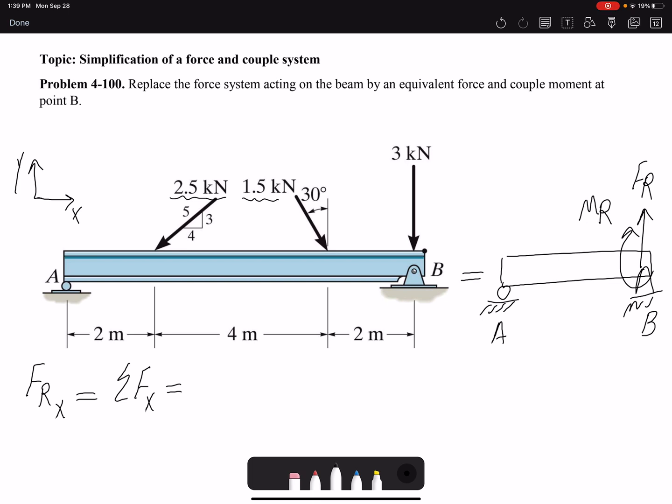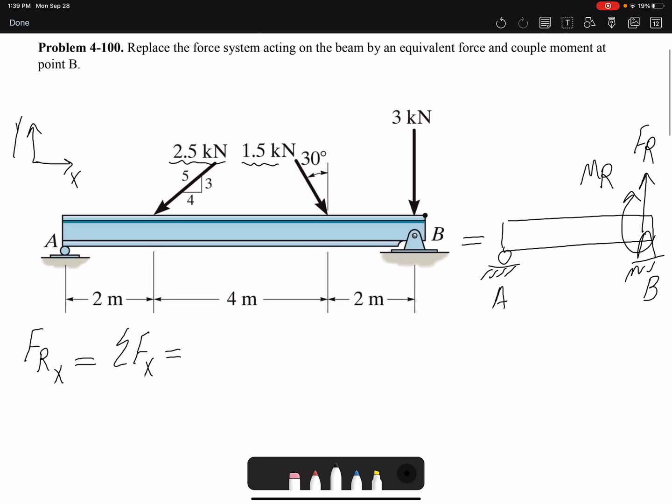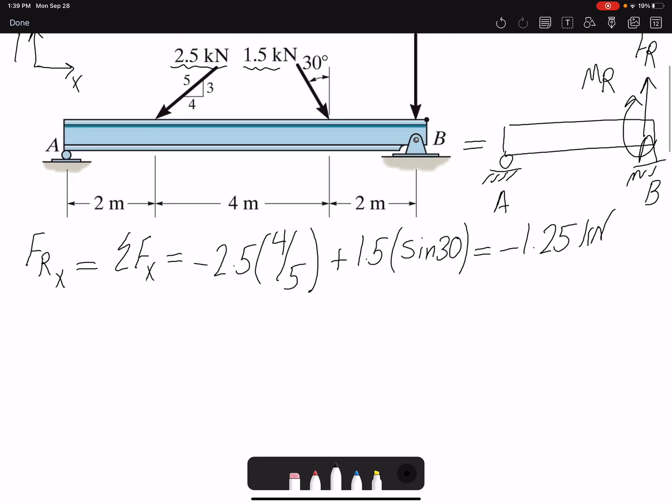So our 2.5 component would be negative. So that would be negative 2.5. If I want to find the horizontal component, that would be 4 over 5. My force, 1.5 kilonewton, will have a positive component in x direction and that would be sine 30. So at the end, the result would be negative 1.25 kilonewton. So that's the x component of forces.